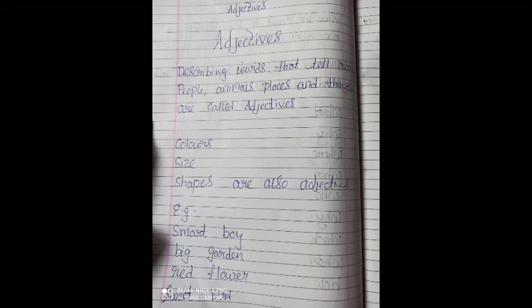Okay, so adjectives are the word which describes people, which describes animal, places, things. It also tells us about the color, shape and sizes.